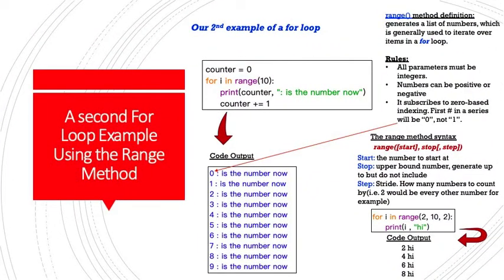Here is another example of a for loop. In this loop, we're going to make use of something known as the range method. So we have a counter set to zero, and we have for I in range 10, and then we print the counter value and is the number now. And then we increment the counter up by one. So the range method, it generates a list of numbers, which is generally used to iterate over items in a for loop. The rules are as follows. All parameters must be an integer. Numbers can be either positive or negative. It subscribes to zero-based indexing, meaning the first number in a series will be zero instead of one.